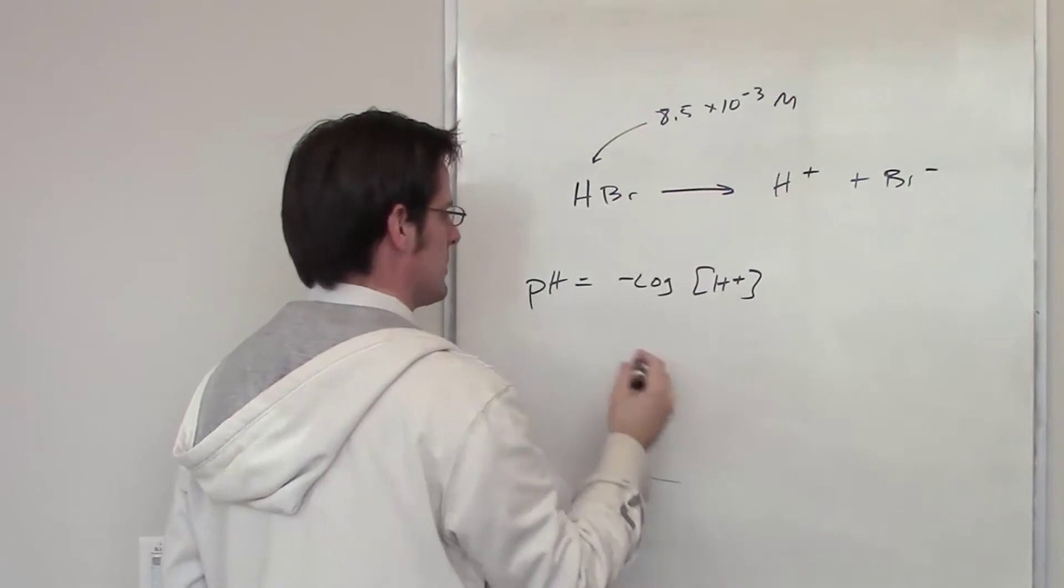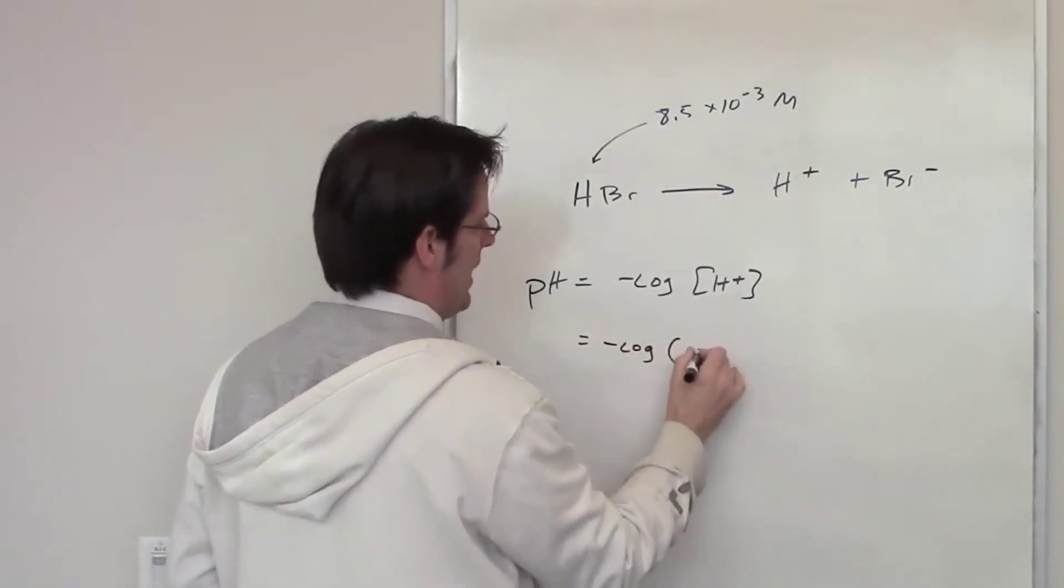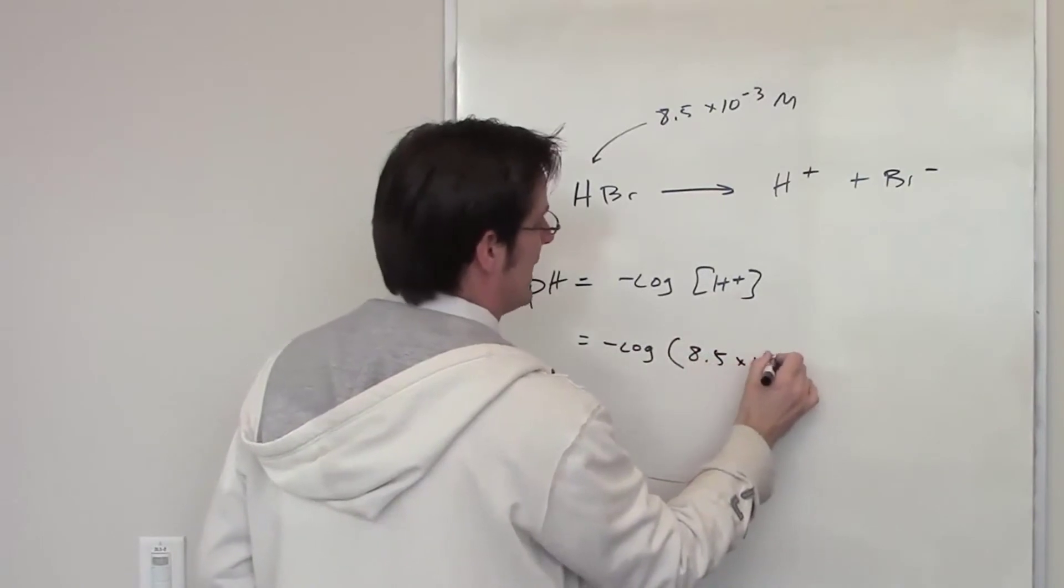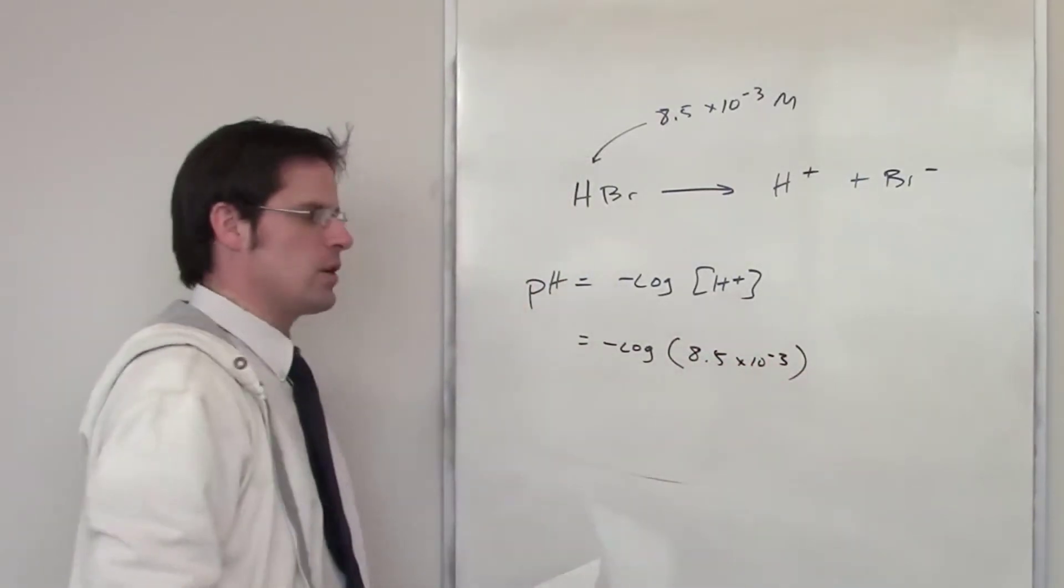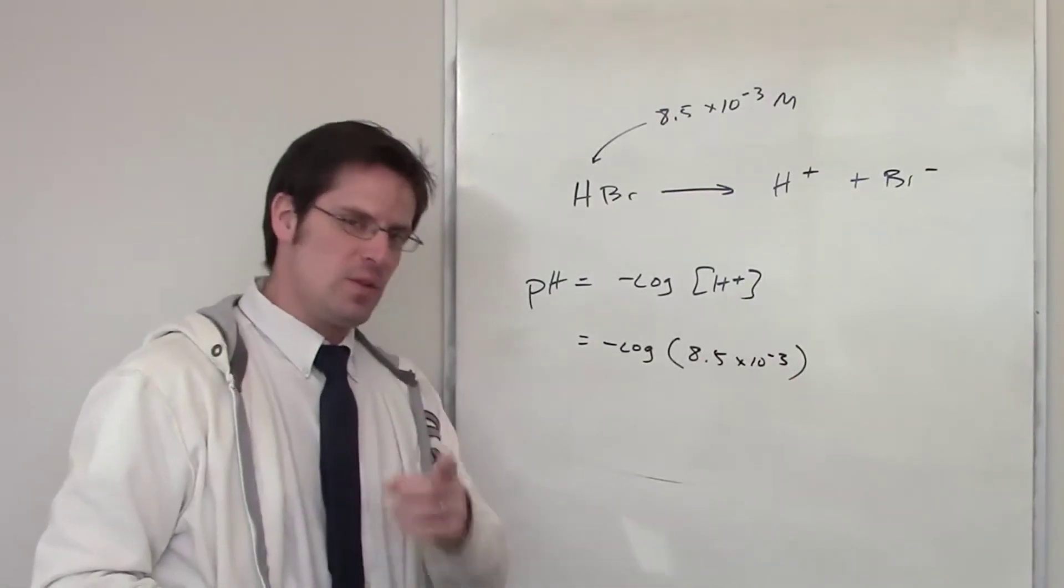The stoichiometry of HBr to these products means that pH is going to equal the negative log of 8.5 × 10^-3. You throw that into your calculator that will give you the pH. I'll let you do that on your own.